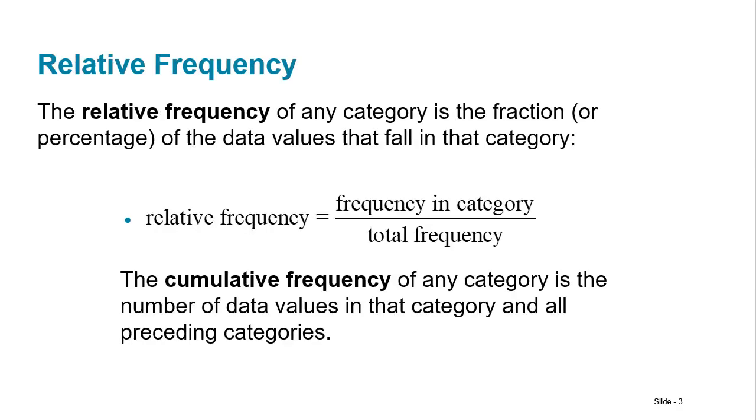Then you could make that table a little bit more advanced and you could add in relative frequency. Instead of telling me there are 6 of these, 7 of these, 10 of these, and 12 of these, you could then also report how much that is of the total, so the frequency of that category divided by the total frequency.